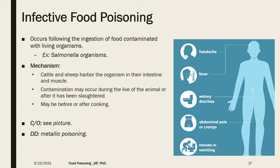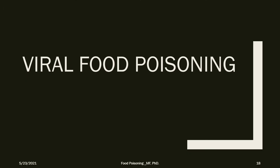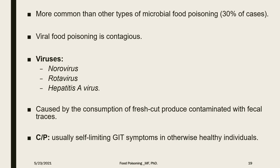The differential diagnosis for this case could be heavy metal poisoning. Moving to viral food poisoning: this is a very common type of microbial food poisoning, accounting for around 30% of cases, and it is highly contagious. Common causative viruses include norovirus, rotavirus, and hepatitis A virus. Contamination usually occurs through consumption of fresh-cut produce that has not been cooked and is contaminated with fecal traces due to poor food handling. The clinical picture is usually self-limiting GIT symptoms in healthy individuals, but complications such as dehydration and renal failure can be lethal.